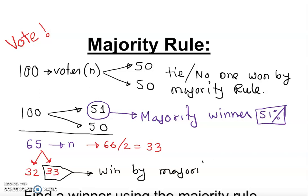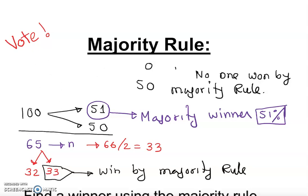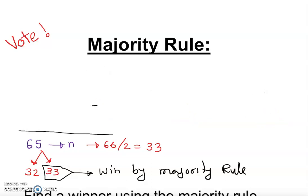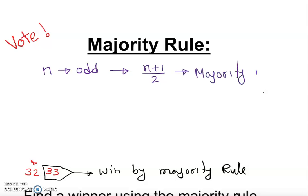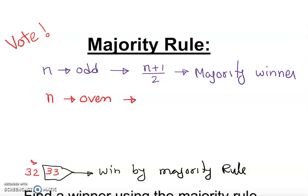So here's the rule: if my n is odd, I add one to n and then divide by two — that gives me the majority threshold. If my n is even, I divide n by two to get 50%, then add one, so it gives me more than 50%, which is the majority winner threshold.